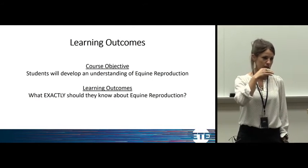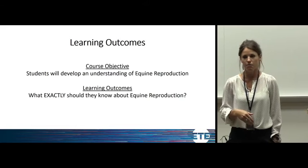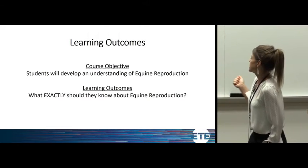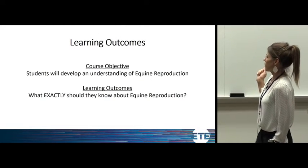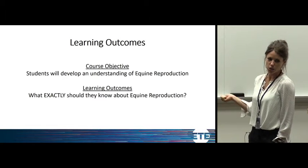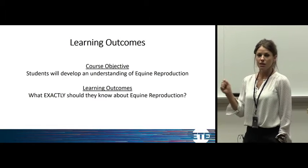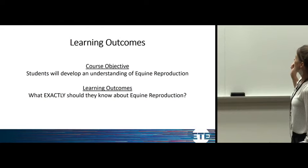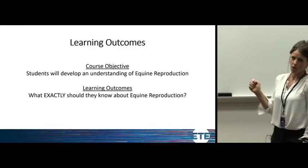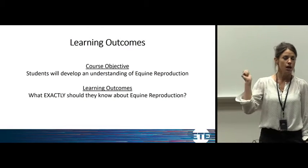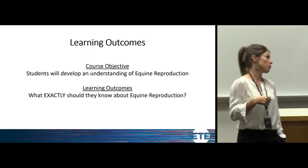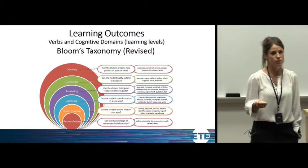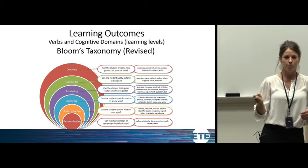This is where learning outcomes come into play. A learning outcome can be an I-can statement, a learning objective, or even an indicator if you come from K-12. But it's going to be incredibly specific. So in my ADVS 2190 course, when I talk about equine reproduction, I'm very specific about what I want students to develop an understanding of.